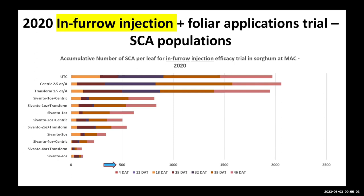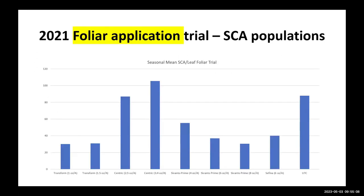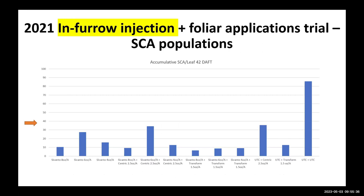Comparing year to year — in 2021, the foliar application performed very well because we had much more rain, and the cumulative threshold was only around 60 aphids per leaf. Almost all insecticides worked well at that level. In a low-pressure year like that, in-furrow injection is like an insurance policy you may never need.